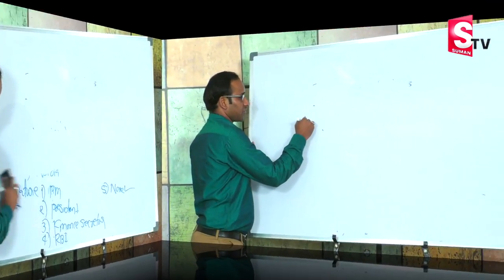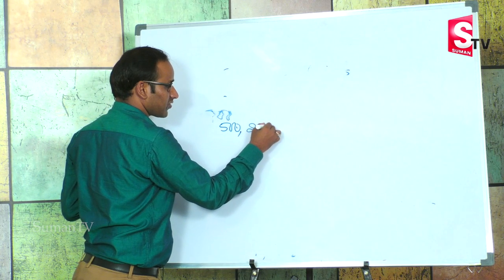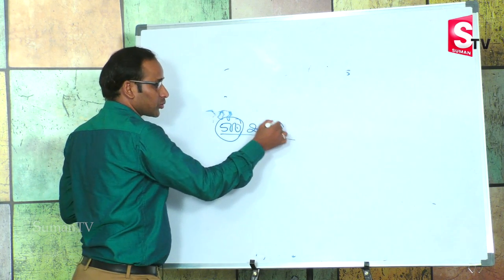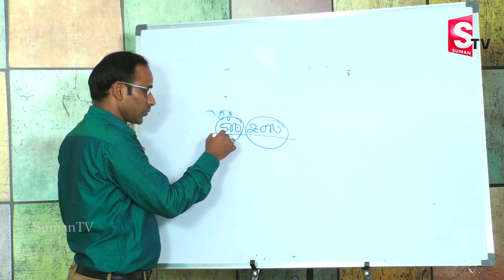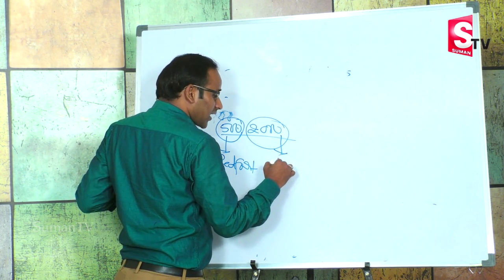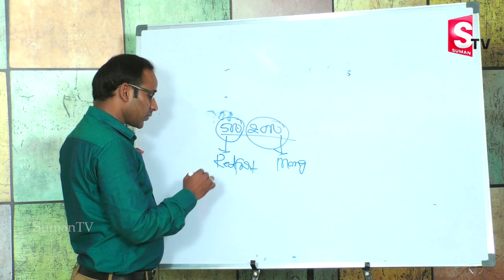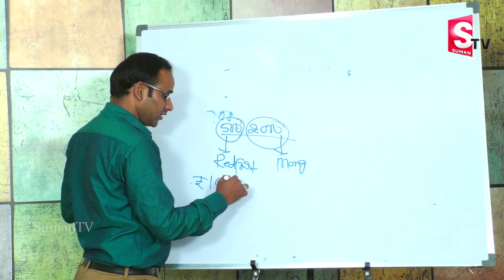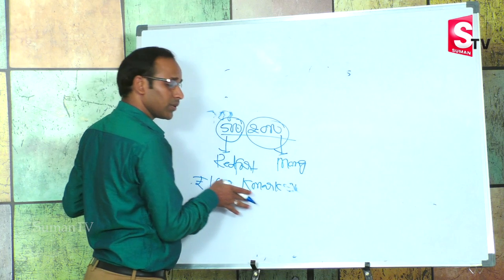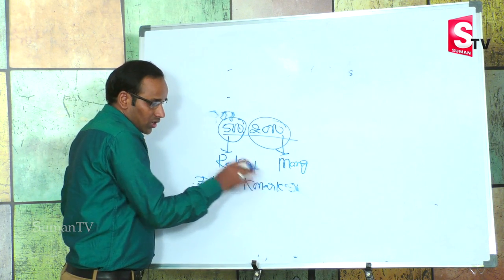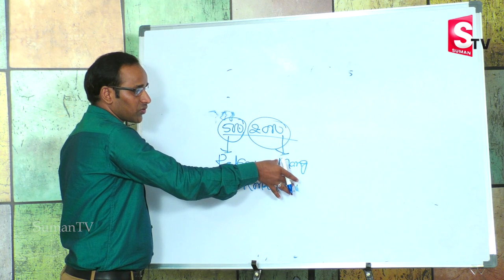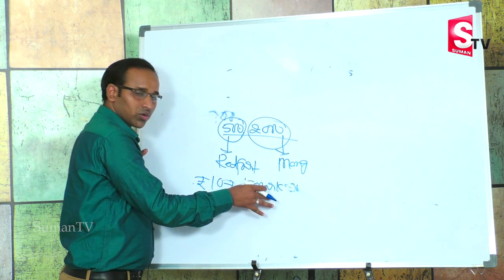The features of currency notes are also important. The backside symbol on the 500 rupee currency note is the Red Fort. The backside symbol on the 200 rupee currency note is Mangalyaan. The recently issued 10 rupee currency note features the Konark Sun Temple, which is located in Bhubaneswar and is also known as the temple city of India.